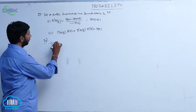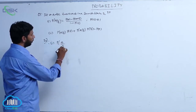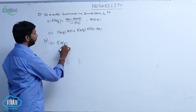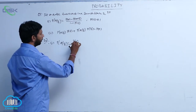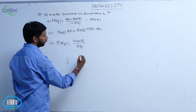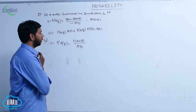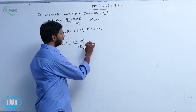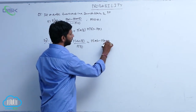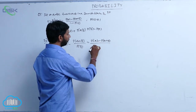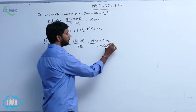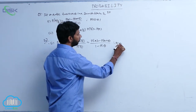P of A given B bar is equal to P of A intersection B bar by P of B bar. So P of A intersection B bar divided by P of B bar — here P of A intersection B bar can be written as P of A minus P of A intersection B, divided by P of B bar, which is 1 minus P of B. This exists only when P of B is not equal to 1.